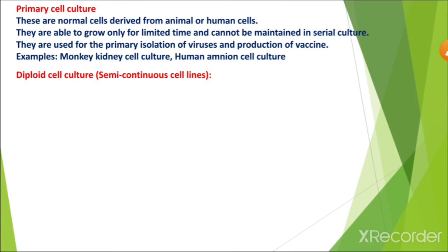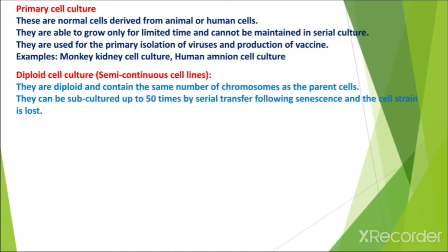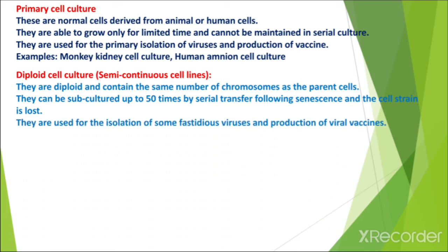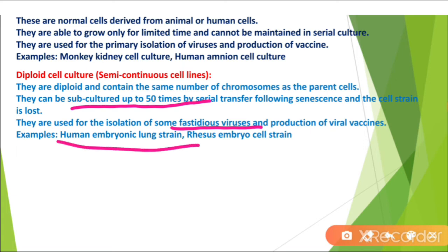Diploid cell culture, also known as semi-continuous cell lines, are diploid and contain the same number of chromosomes as the parent cells. They can be subcultured up to 50 times by serial transfer, after which the cell strain is lost. They are used for the isolation of fastidious viruses and production of viral vaccines. An example is the human embryonic lung strain.